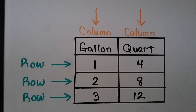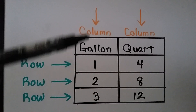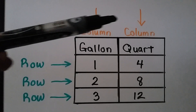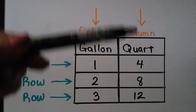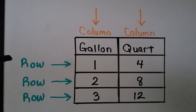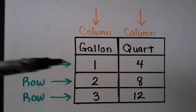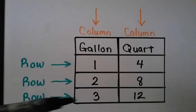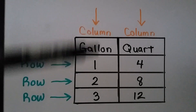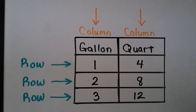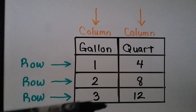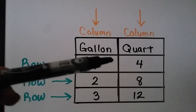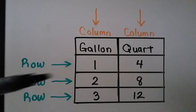Remember that this is a column, this is a column, and these are rows going across. Columns go up and down vertically, and rows go across horizontally.